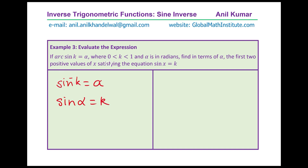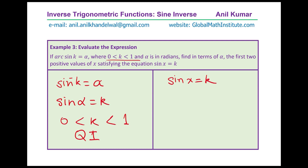Since k is between 0 and 1, we are working in quadrant 1. We need the first two positive values of x satisfying sine x equals k. Since k equals sine alpha, that means x equals alpha is our first answer. The question asks for first two positive values.